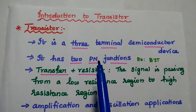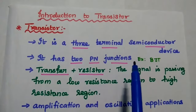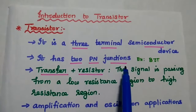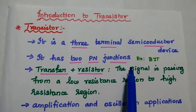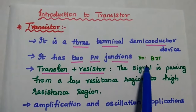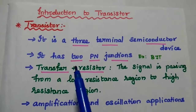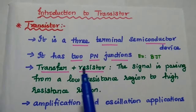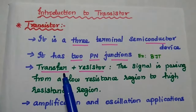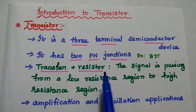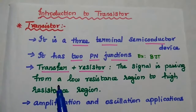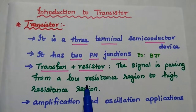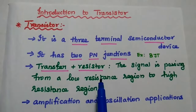But it is not necessary to have two PN junctions for all transistors. There is an exceptional transistor called unijunction transistor, i.e. UJT. But in general, almost all the transistors have two PN junctions. Transistor means transfer resistor, i.e. the signal is passing from a low resistance region to high resistance region. That is why it is called a transistor.